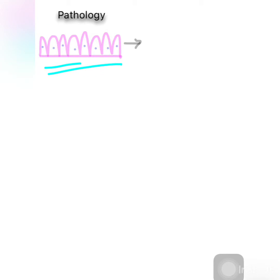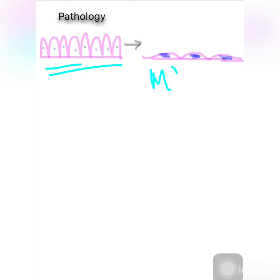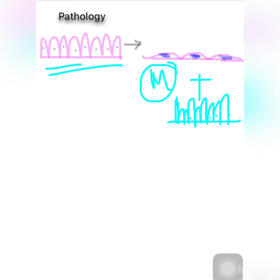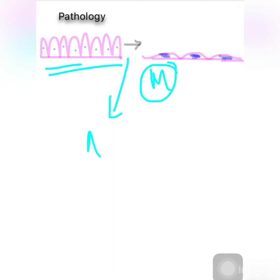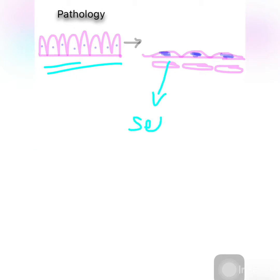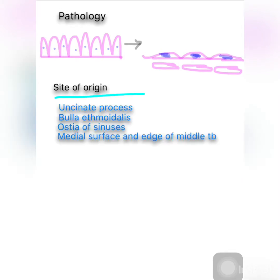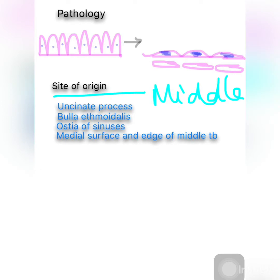Pathology, meaning histology: in early stages, the surface of the nasal polyp is normal — that is, ciliated columnar epithelium. Later it undergoes metaplastic change to transitional cells and squamous-type cells due to atmospheric irritation. The submucosa shows large intercellular spaces filled with serous fluid, and there is infiltration with eosinophils and round cells.